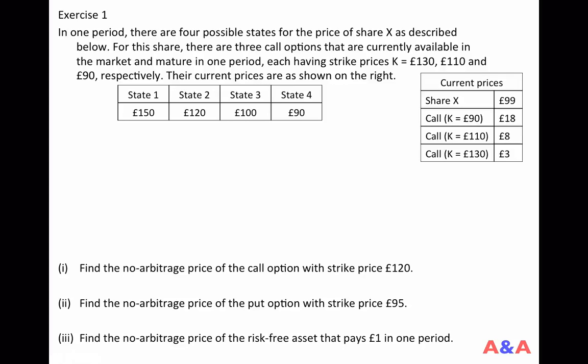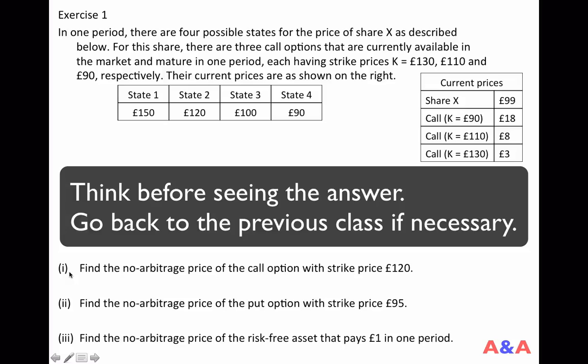In a previous class, we had three possible states for the future and three assets. In this question, we have four possible states and four assets, but in other respects the idea should be the same. Question 1: find the non-arbitrage price for the call option with strike price 120 pounds. Question 2: find the non-arbitrage price of the put option with strike price 95 pounds. Question 3: find the non-arbitrage price of the risk-free asset that pays 1 pound in one period.